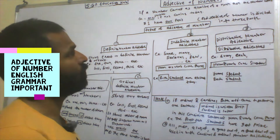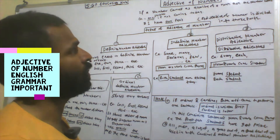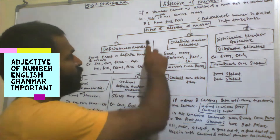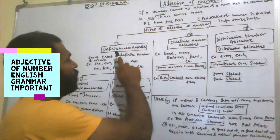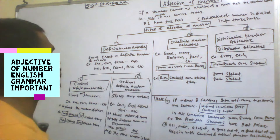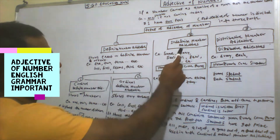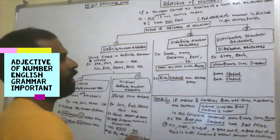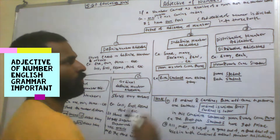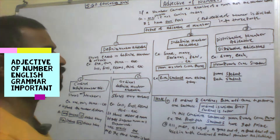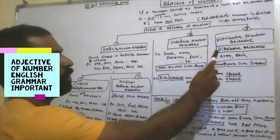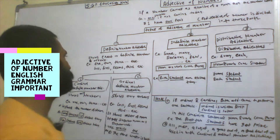Adjective of number is divided into three parts — three types of adjective. The first part is definite number adjective. The second is indefinite number adjective. And the third is distributive number adjective, which is also called distributive adjective.